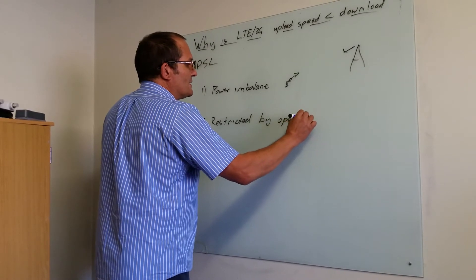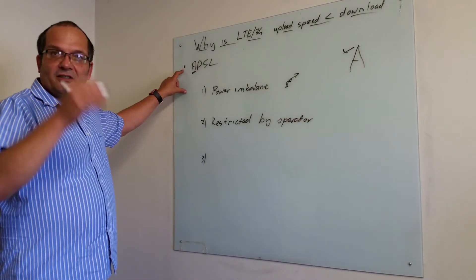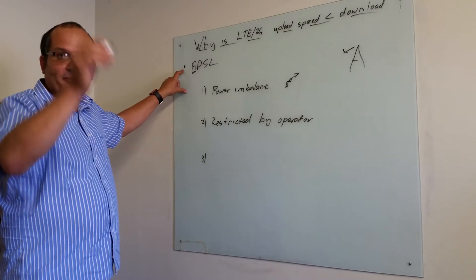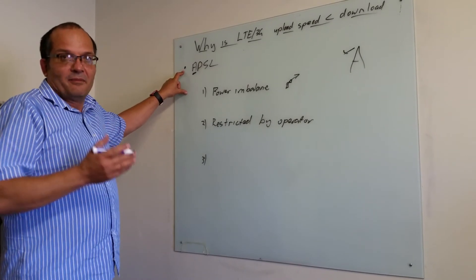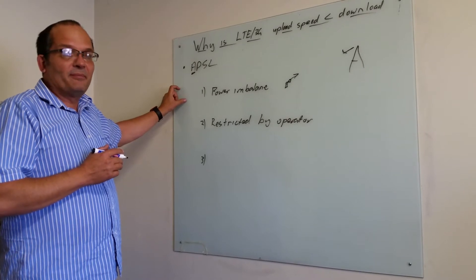So in other words, the operator, somewhat like ADSL, allows you only slow speeds up and higher speeds down because they're still working in the world where that often happens.